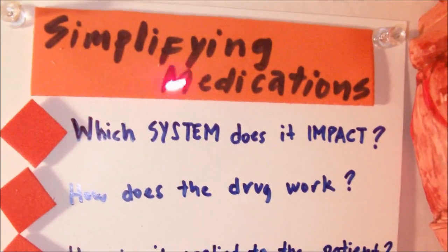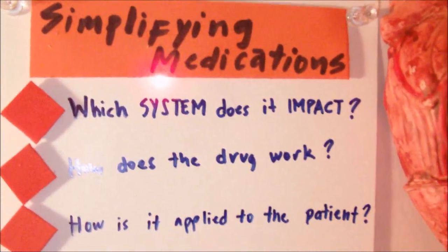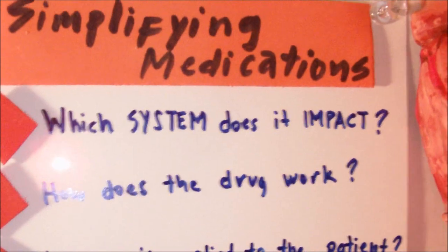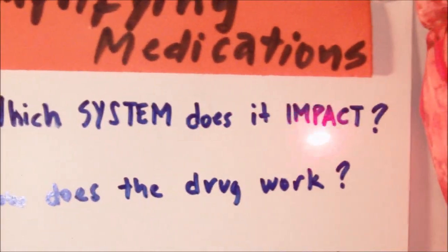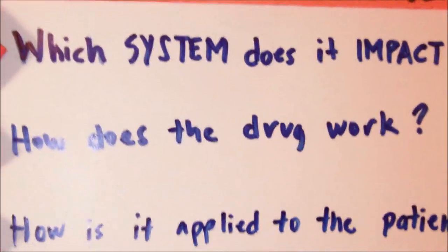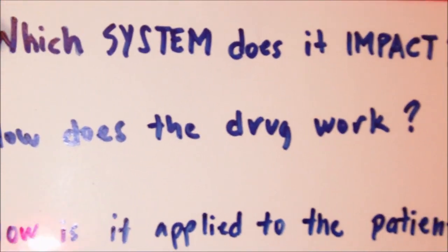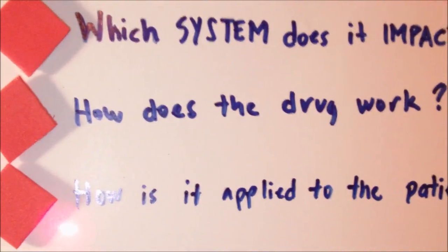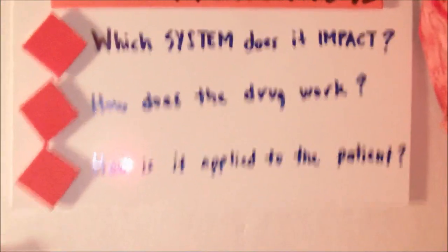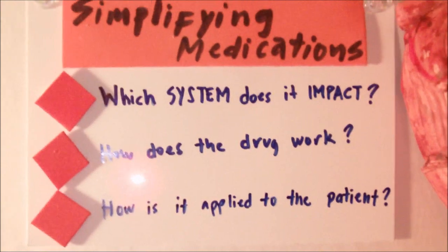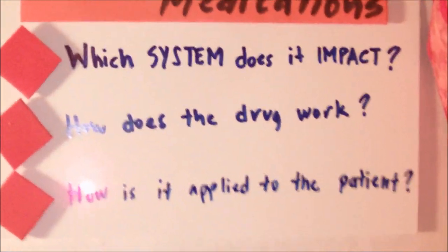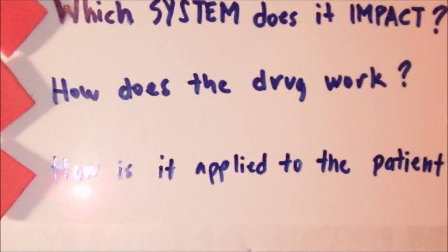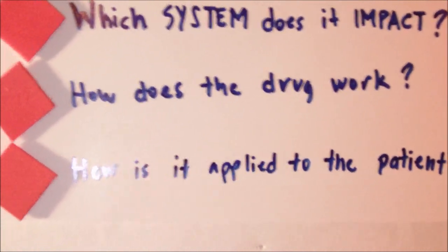This strategy will involve simplifying medications in a way that benefits our brain and its working mechanism. First, we divide the drugs based on the system that it impacts the most. Second, we analyze on a basic level the pharmacodynamics and pharmacokinetics — basically, how the drugs work and what they do. Because once we understand this, it can be easier to conceptualize side effects and interactions. And lastly, we need to know any important implications and interventions that need to be applied towards the patient taking this medication.